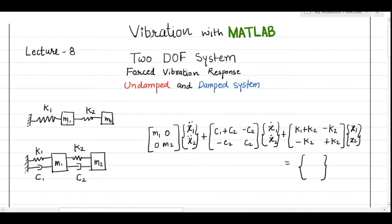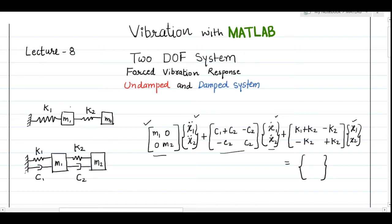This is the system with two masses connected with two springs, and similarly a system with damping. Here I am showing the governing equation with the mass matrix, damping matrix, and stiffness matrix — multiplied with acceleration, velocity, and displacement respectively. Since this is a forced vibration problem, I can apply force on either mass or both masses, for example F1 = F1·sin(ω1·t) and F2 = F2·sin(ω1·t) or sin(ω2·t).